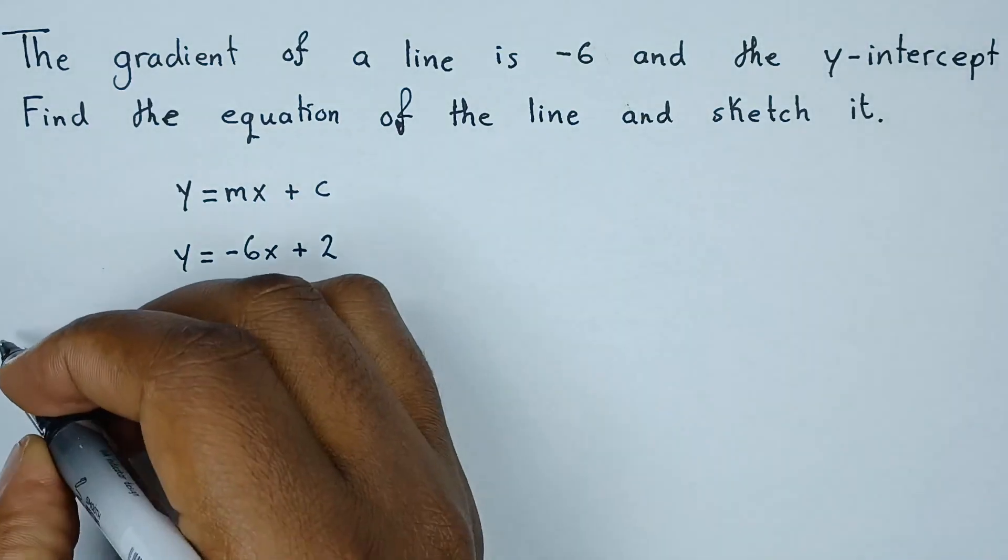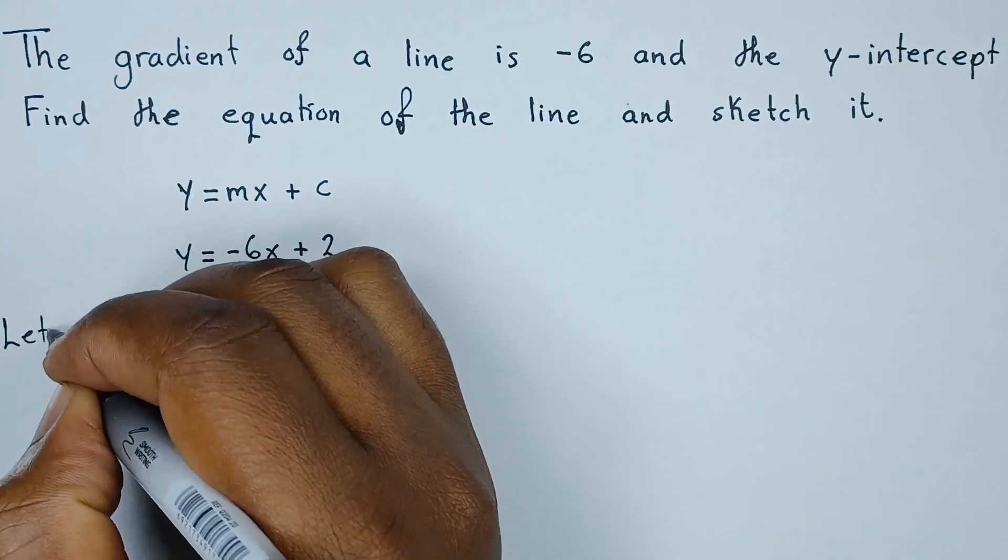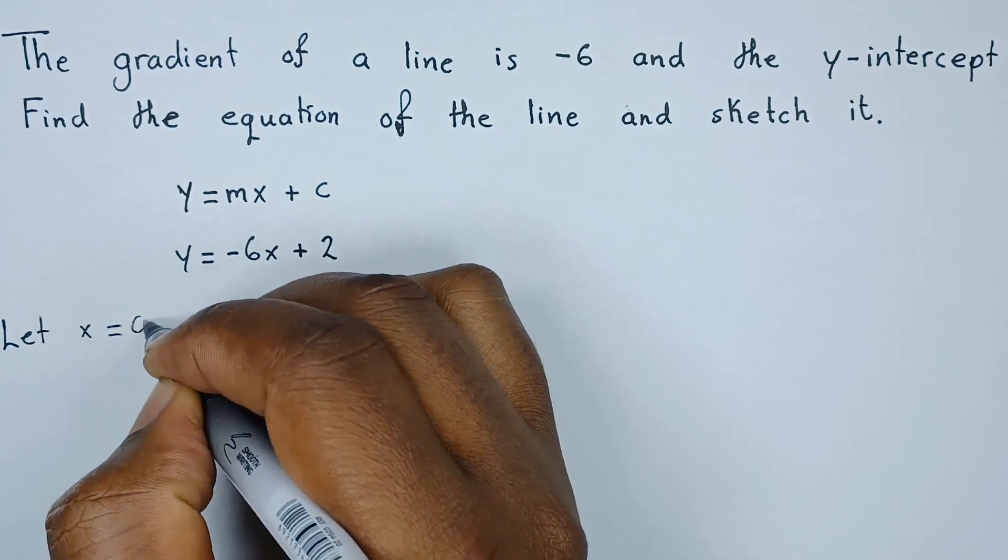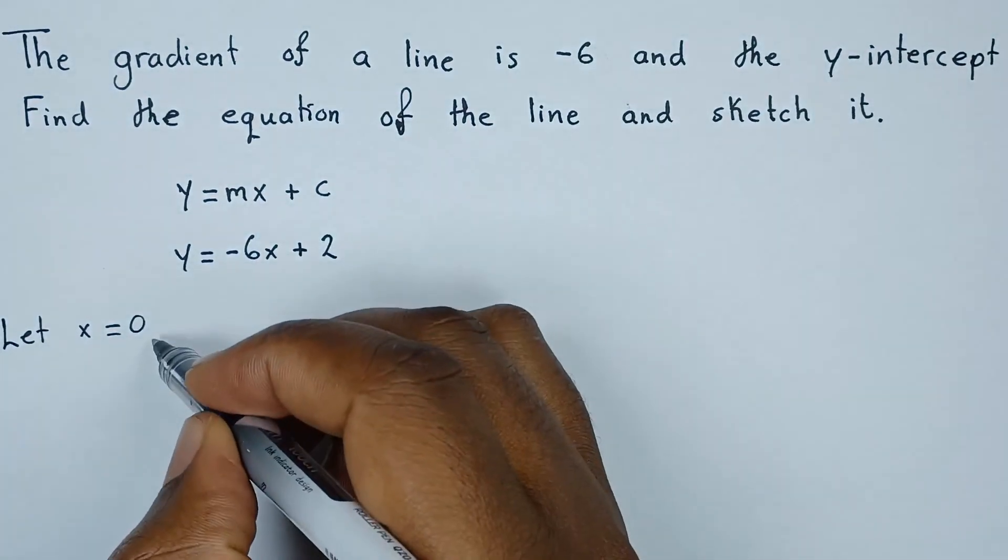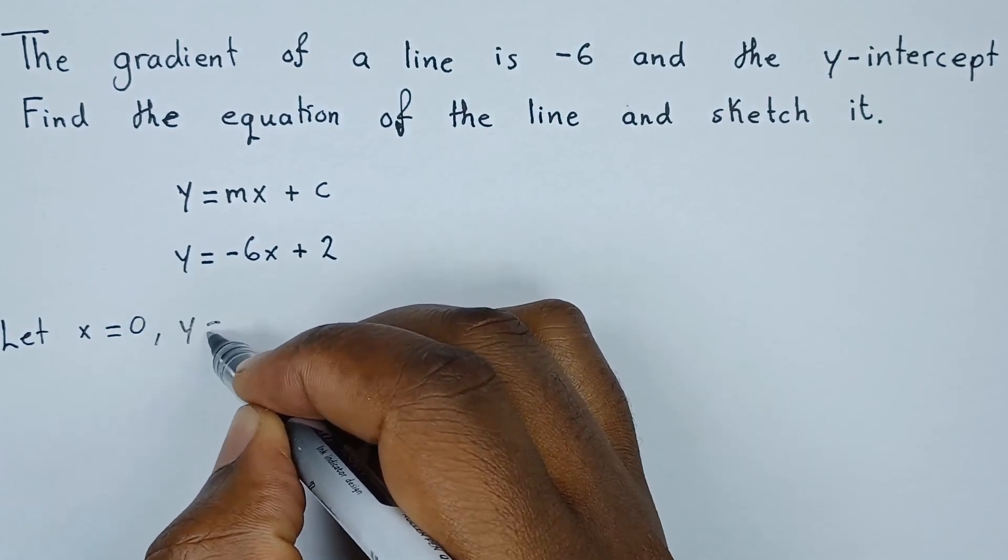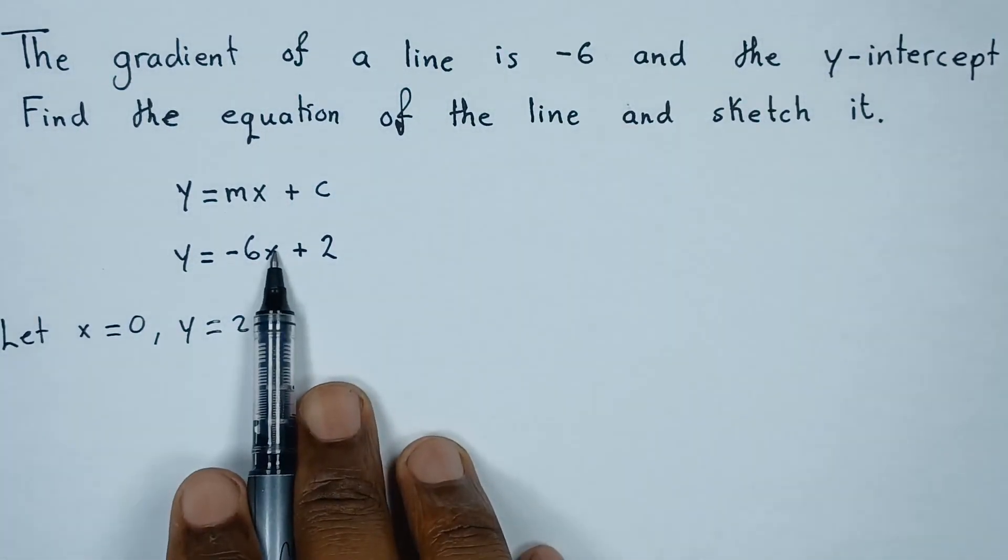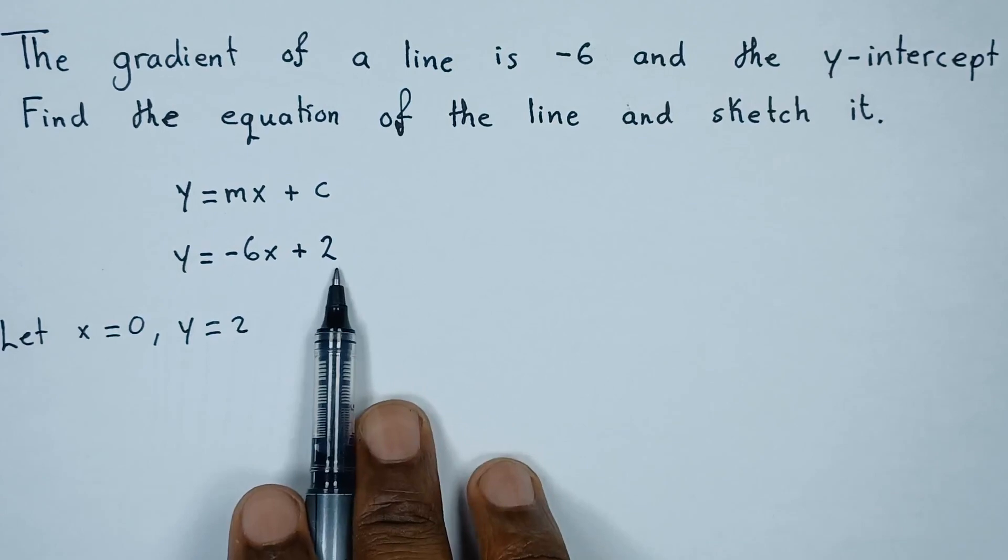To start with, we're going to say let the value of x be equals to 0. So if the value of x is equals to 0, then the value of y will be equals to 2, because here where there's x, if we put a 0, then y is just equals to 2.